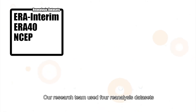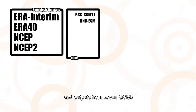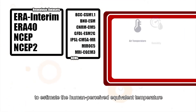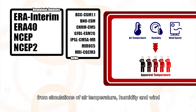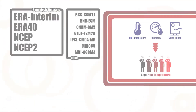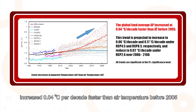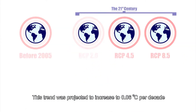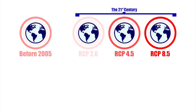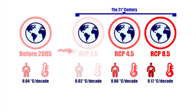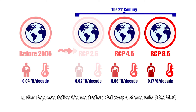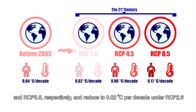Our research team used four reanalysis datasets and outputs from seven GCMs to estimate the human perceived equivalent temperature from simulations of air temperature, humidity, and wind. We found that the reanalysis datasets and GCMs indicated that the global land average apparent temperature increased 0.04 degrees Celsius per decade faster than air temperature before 2005. This trend was projected to increase to 0.06 degrees Celsius per decade and 0.17 degrees Celsius per decade under RCP 2.6 and RCP 8.5 scenarios.